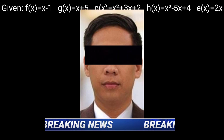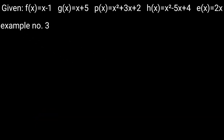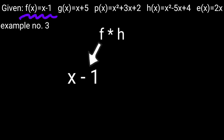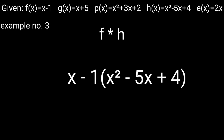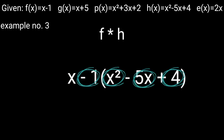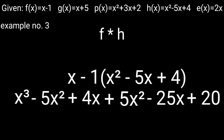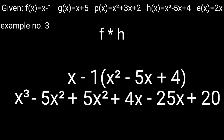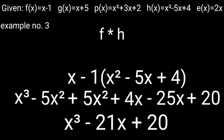Example 3: f times h — substitute f with x − 1 and h with x² − 5x + 4. Since it's a binomial times a trinomial, we do not use FOIL. Distribute x to x², −5x, and 4; then distribute −1 to x², −5x, and 4. This gives x³ − 5x² + 4x − x² + 5x − 4. Combine like terms: −5x² + (−x²) cancel out, giving the final answer x³ − 6x² + 9x − 4.